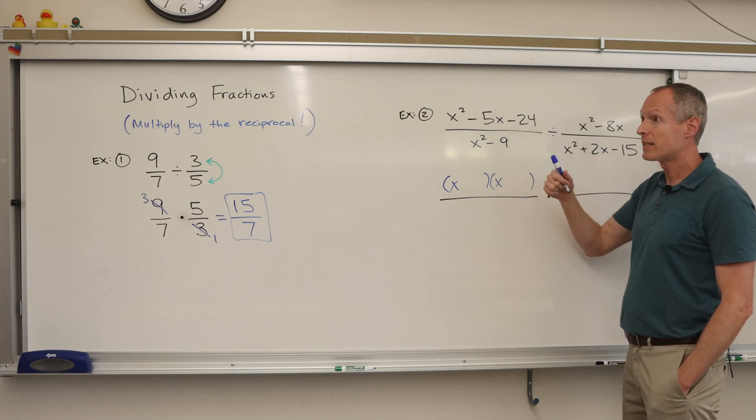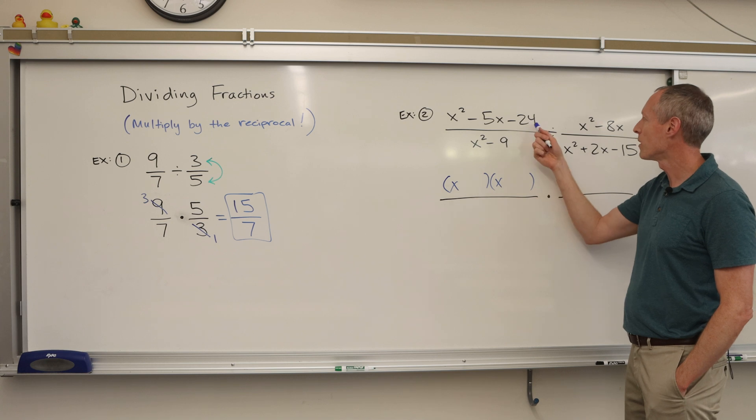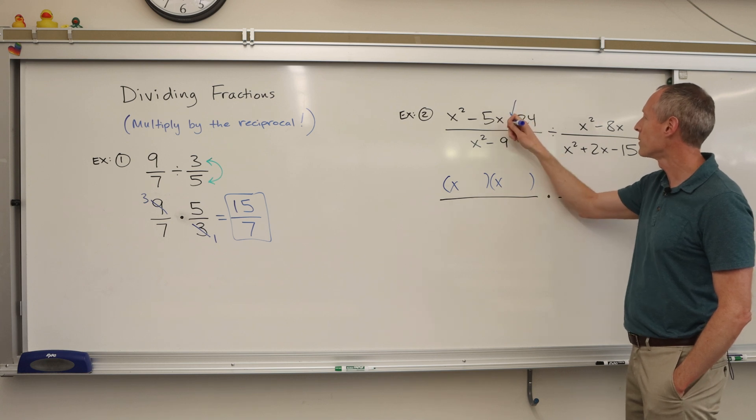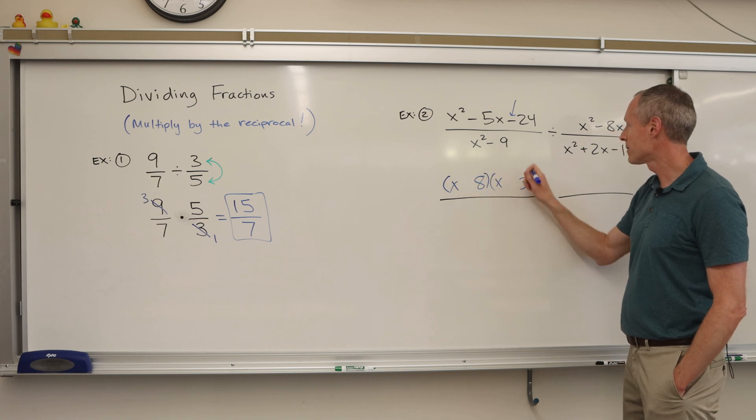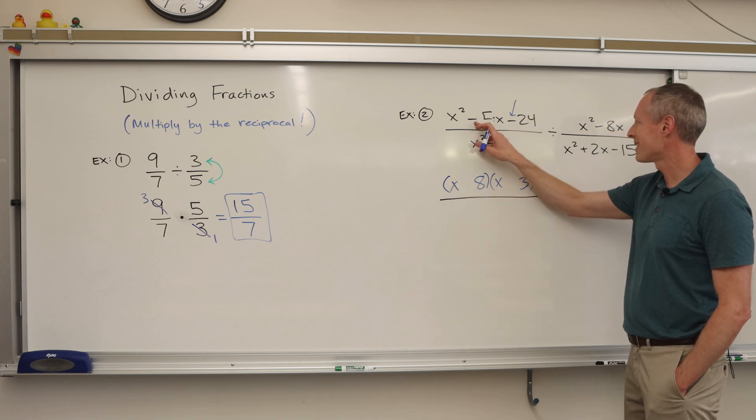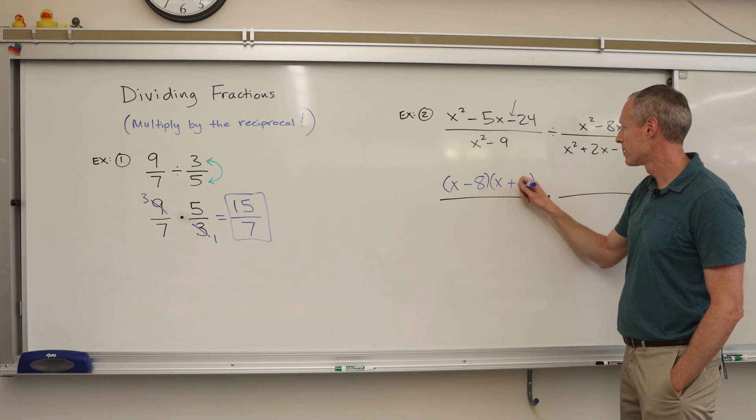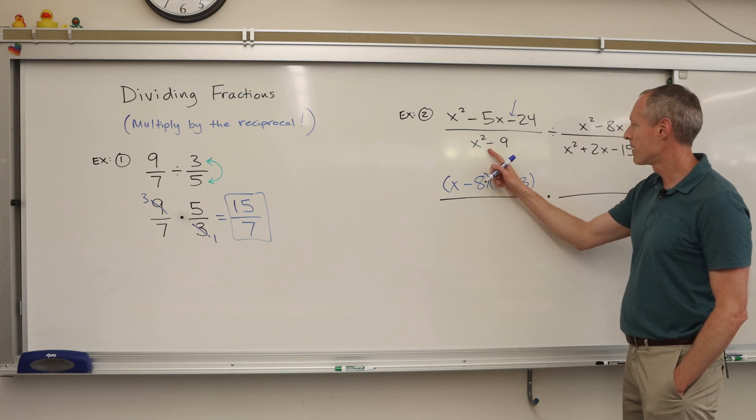So x squared will be x times x and then 24, the factors 8 times 3 or 4 times 6 or 2 times 12, but you want the factors that would subtract to give 5. So it's got to be 8 and 3. 8 times 3 is 24, but to get that negative 5, you'd have negative 8, positive 3.